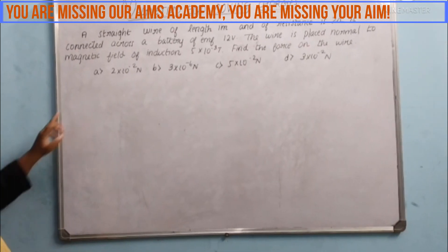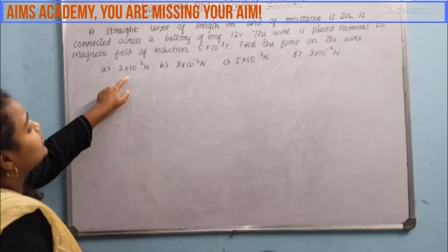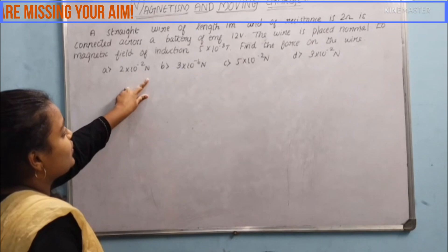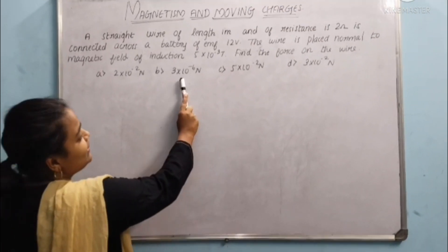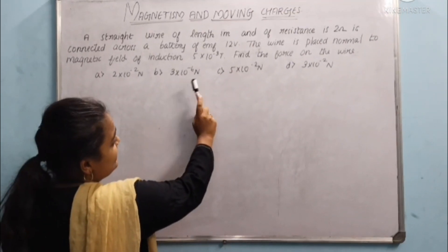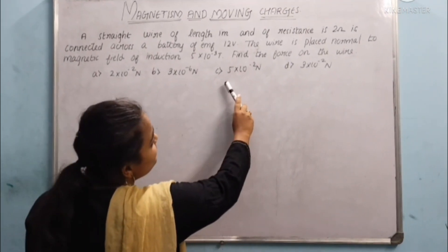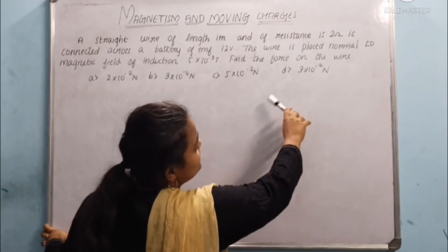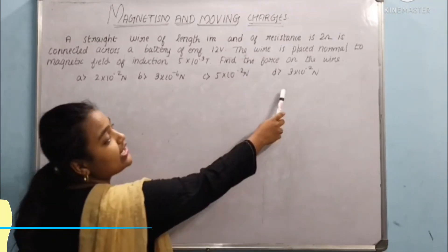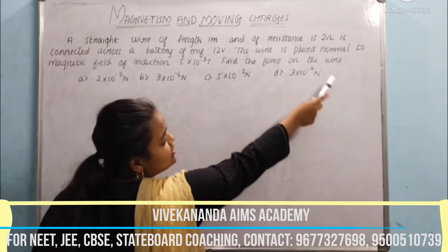The given options are: option A, 2 into 10 power minus 2 N; option B, 3 into 10 power minus 6 N; option C, 5 into 10 power minus 2 N; option D, 3 into 10 power minus 2 N.